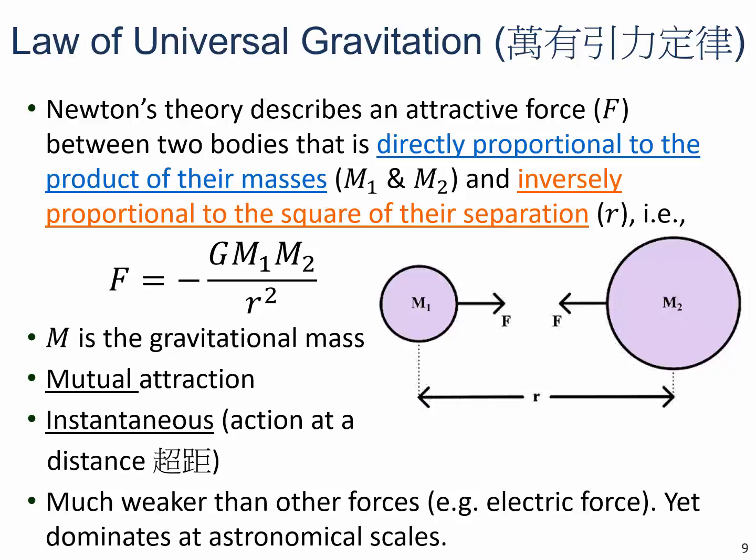Gravitational force is a mutual attraction. Another property is that it's instantaneous — what we call action at a distance — meaning that if there's any change in mass distribution, the whole universe everywhere will feel it immediately. This gravitational force is also much weaker than other forces, such as electric force. For example, if you rub a plastic ruler against your hair, those static charges can produce a large enough electric force to pick up small papers, even though the whole Earth is trying to pull on those papers. Your plastic ruler will win. Similarly, a very small magnet can already pick up paper clips.